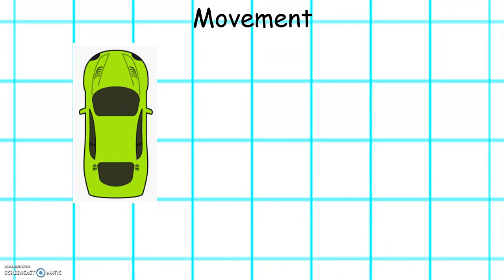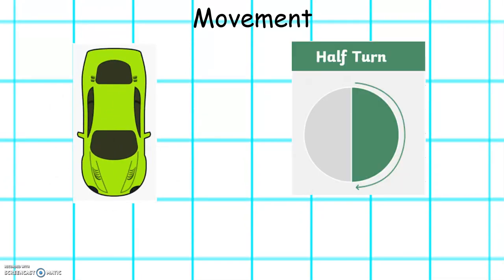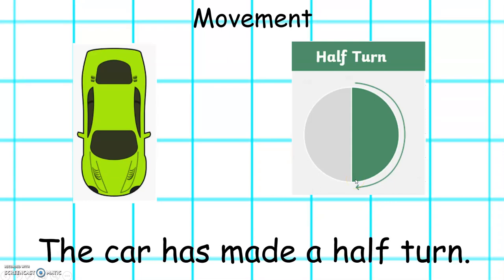Let's look at how the car turns now. The car has made a half turn because it started facing forwards and turned around to face the opposite direction. It's a half turn. If you imagine a circle, it has turned half of it. So the car has made a half turn.